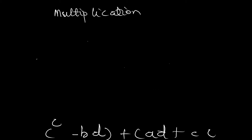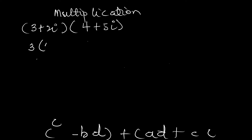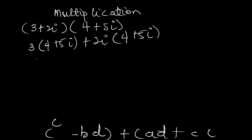Let's multiply these two complex numbers: three plus two i multiplied by four plus five i. Like we did earlier, you take the first part and multiply it by everything in the second bracket, then take the second part and multiply it by everything too. So this three will multiply everything in the bracket four plus five i, and positive two i will also multiply everything in four plus five i.